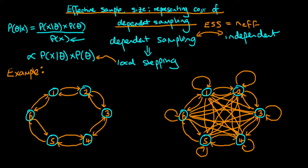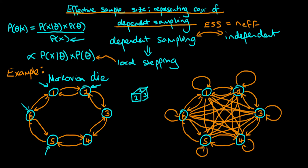On the left here I've drawn the Markov state diagram for an object I call a Markovian die. A die is a cube where on each side there is a number from one to six. In the Markovian die, if you roll a one you can only obtain a two or a six next. So from a five, you can only throw a six or a four. From any given number you can only get the two numbers immediately adjacent to it.